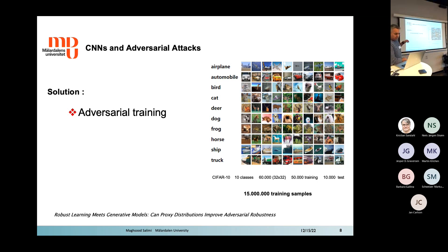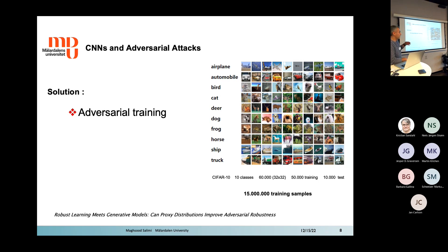The problem with this approach is the time needed to train your CNN. Consider CIFAR-10 with 50,000 training images — you then have 3,000 times more images to train your system to make it robust. Also, for every dataset you must do this again. If you change your dataset, you need to generate a lot of data, requiring a lot of resources and time.